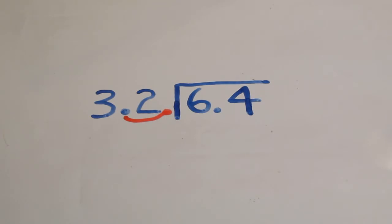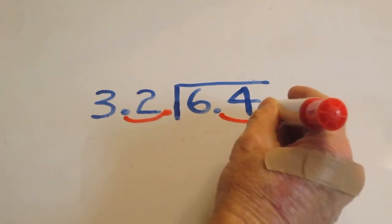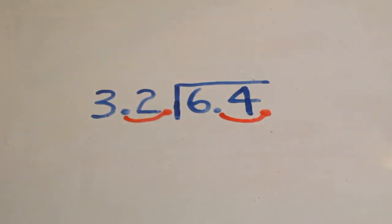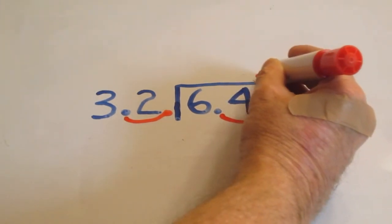Since we move the decimal in the divisor one place to the right, we also need to move the decimal in the dividend one place to the right. Once we've done that, we move the decimal directly above onto the division bar.